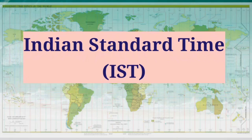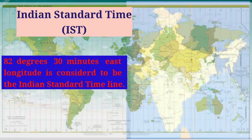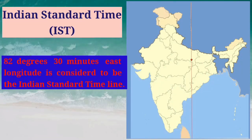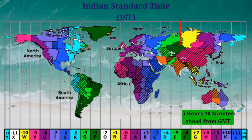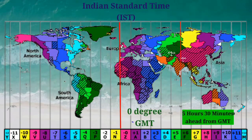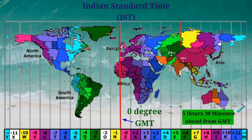82 degrees 30 minutes east longitude is considered to be the Indian Standard Time line. Indian Standard Time, IST, is 5 hours 30 minutes ahead of Greenwich Mean Time, GMT.